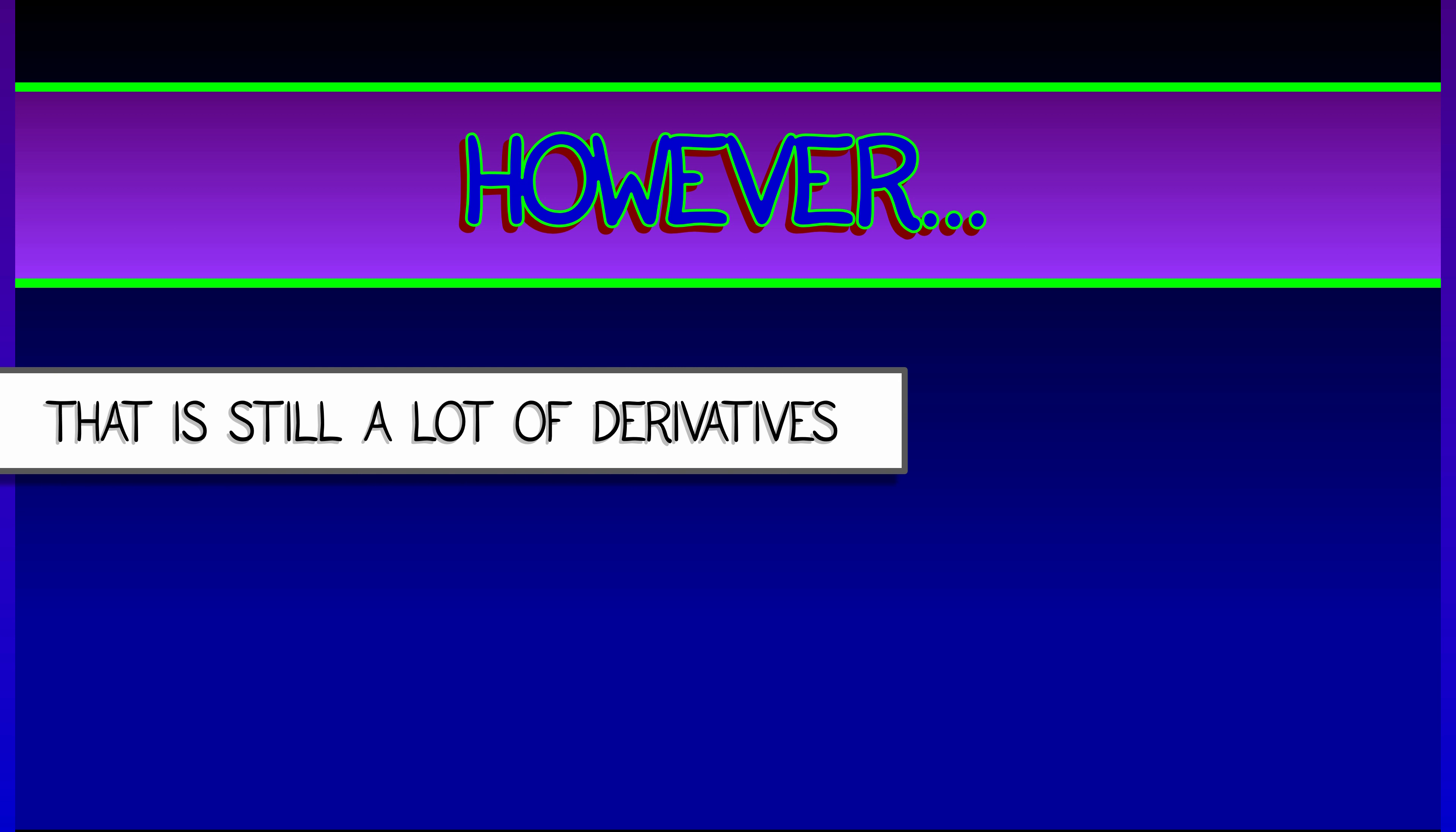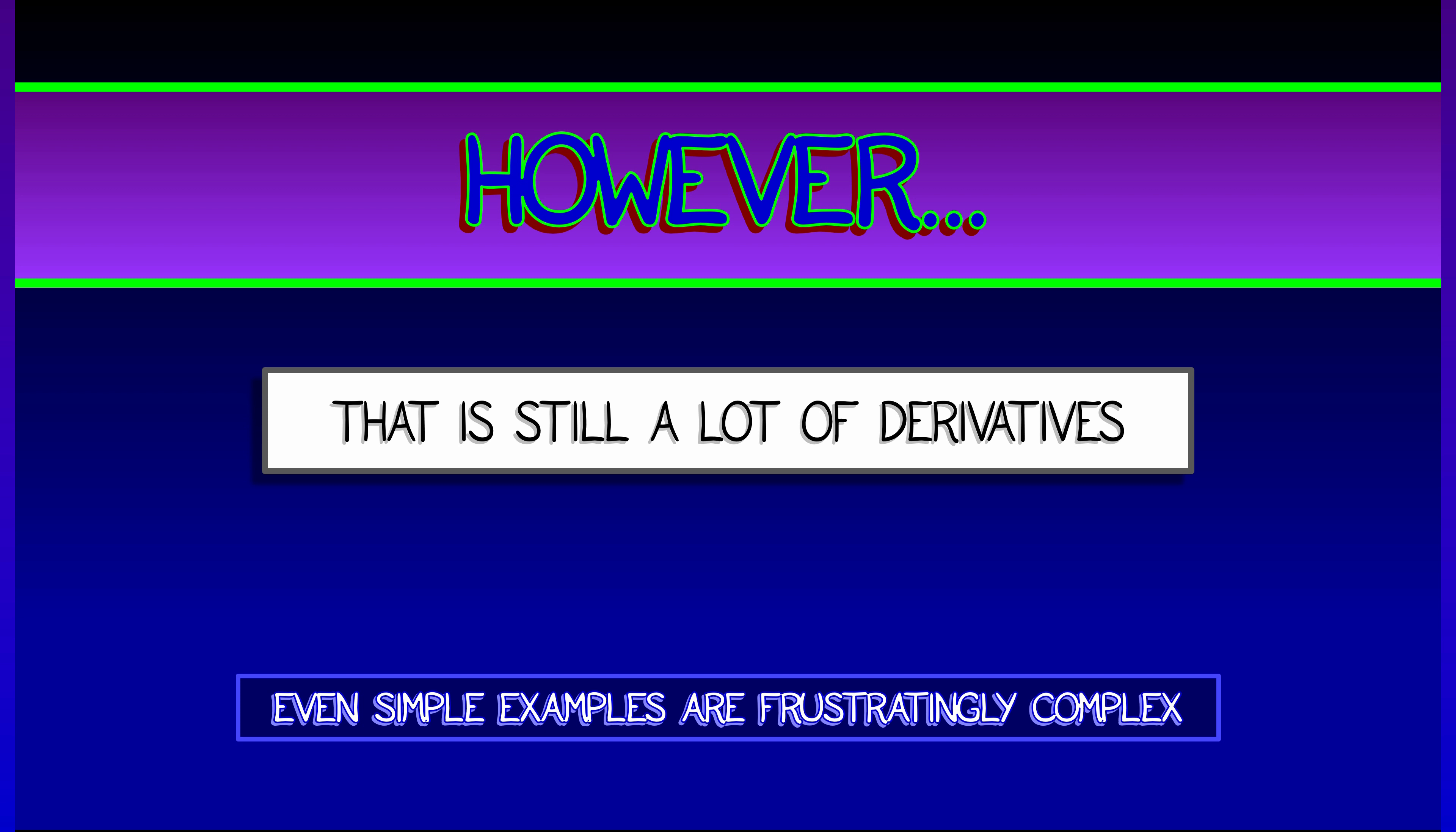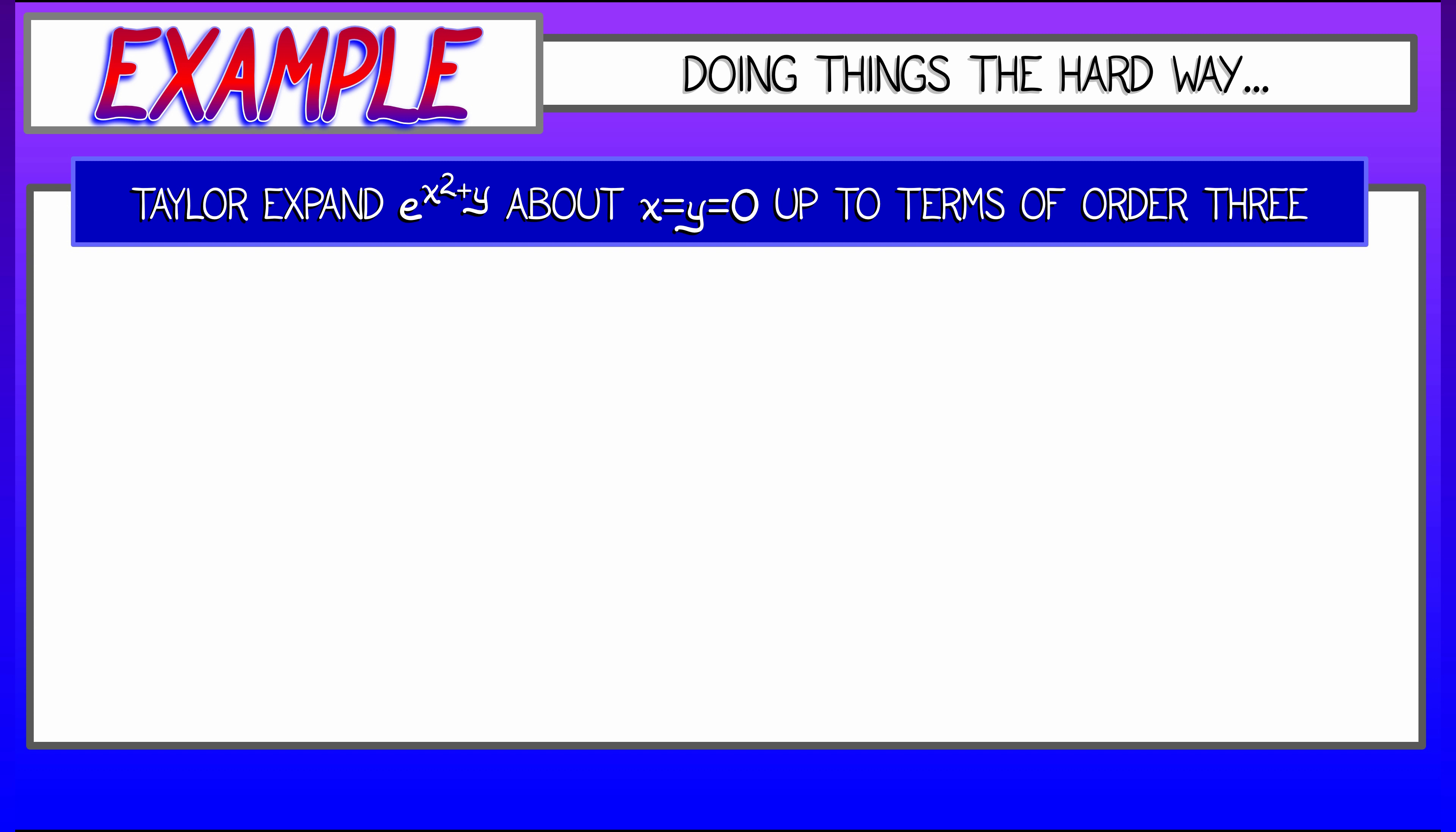Well, in theory, everything works great, but in practice, things can get a little ugly. As we'll see in a reasonably simple example, consider the function e to the x squared plus y. Try to Taylor expand that about the origin up to and including terms of order three.